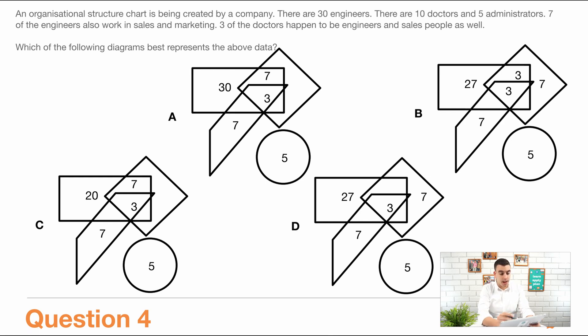So here we have 30 engineers. So I'm going to draw a shape for engineers. I don't know which shape that is, so I'm cheating. Let's just make an imaginary shape. Let's say circle is engineers. There are 10 doctors, so we'll put doctors here, 10. We've got 30 engineers as we said, and then we've got five administrators.